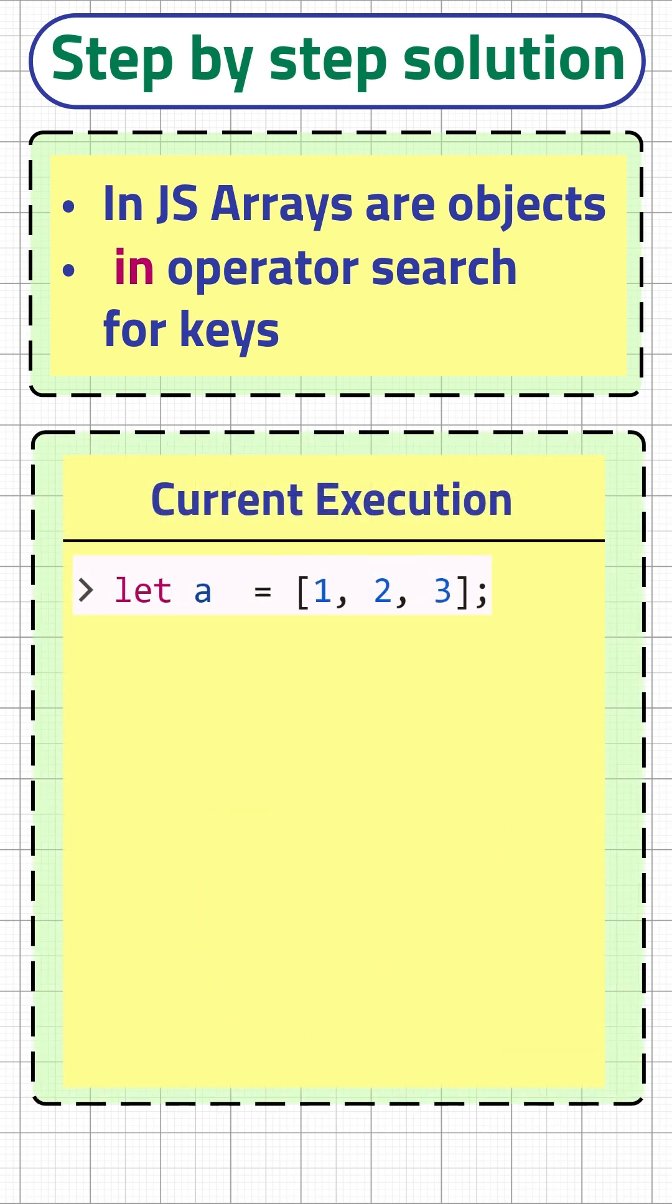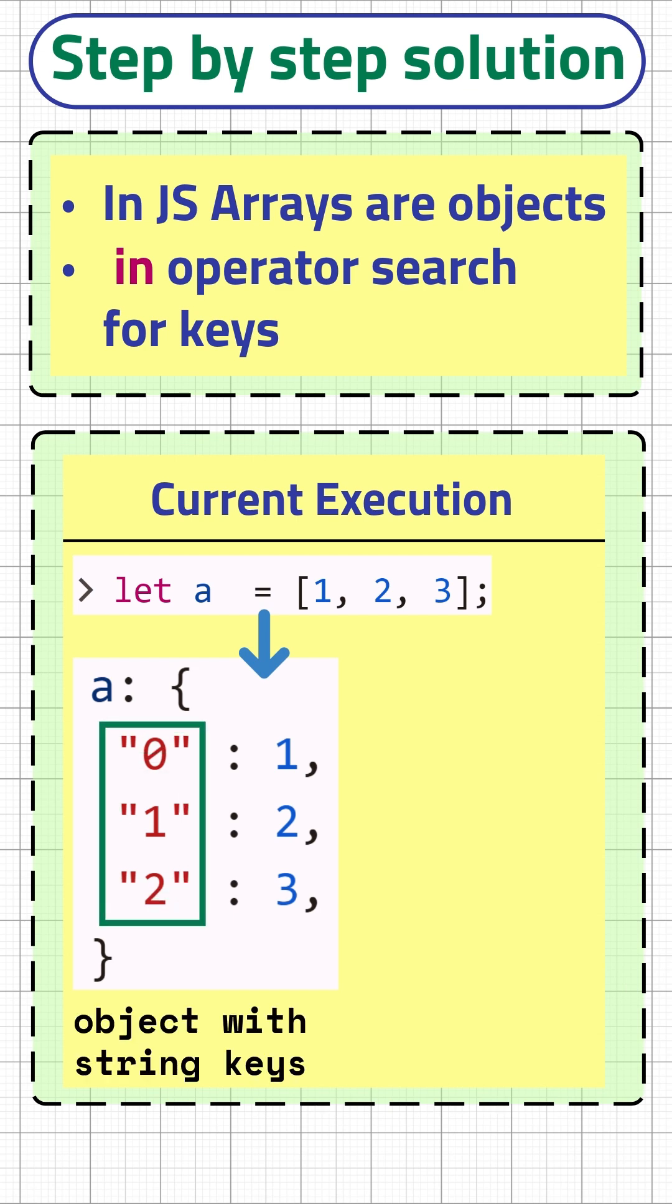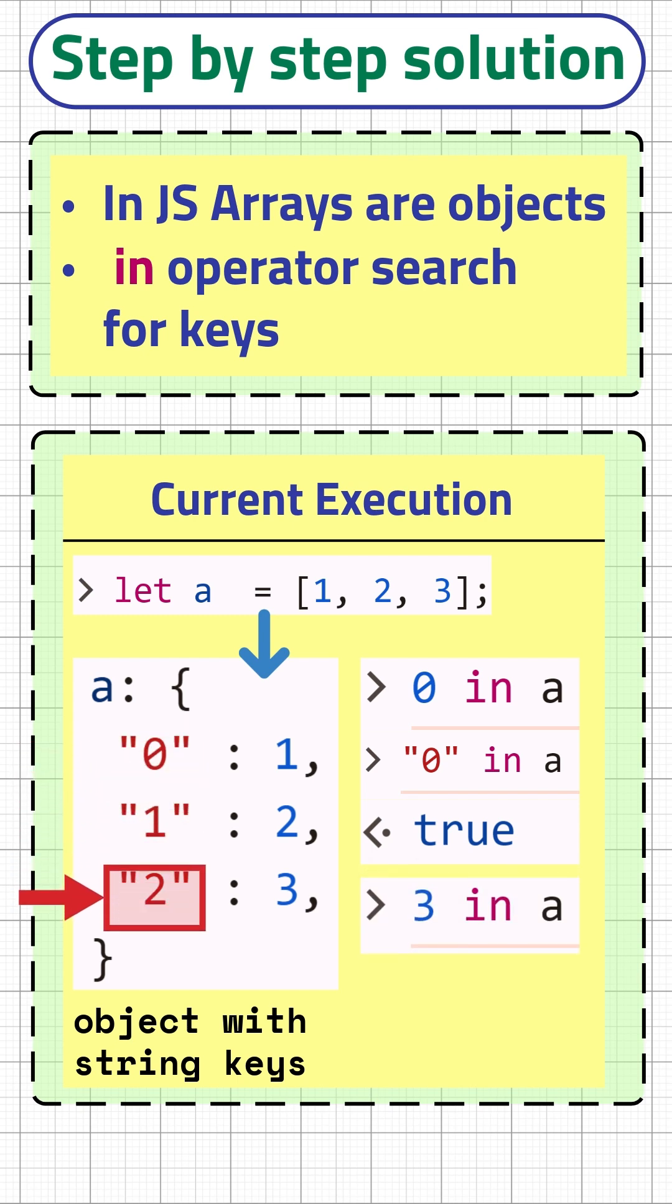When we create an array JavaScript actually treats it like an object with string keys. So either number 0 or string 0 in array returns true because 0 is a valid property key. But since there is no property key named 3 in our array, the last one returns false.